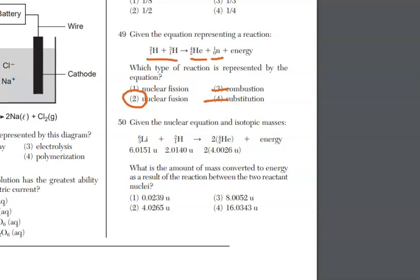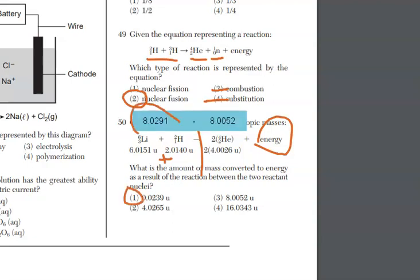Finally, for question 50, we have a nuclear equation again. We're given masses this time, and it says, what is the amount of mass converted to energy as a result of this reaction? With nuclear equations, you get a lot of energy coming out compared to a chemical reaction, and the reason being is Einstein's equation, E equals mc squared. A little bit of mass is converted into a lot of energy. All you're going to do here is you're going to add up the two masses on the left side, multiply the mass here on the right side by two, and take the difference of the two, and that will give you the mass that was converted into the energy. On the left, you get 8.0291, and on the right, you get 8.0052. Take the difference, and here's my answer in choice one. That's the mass that's converted into energy.